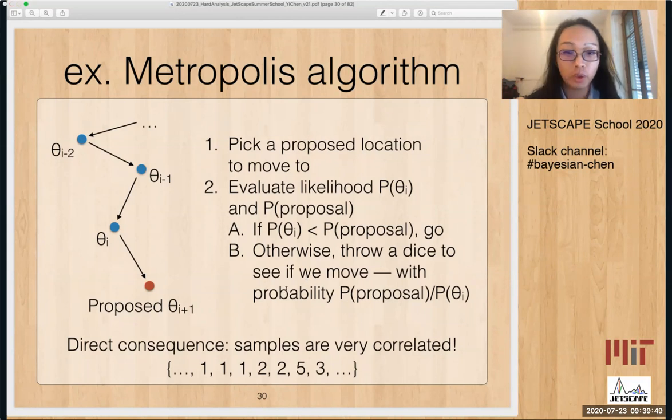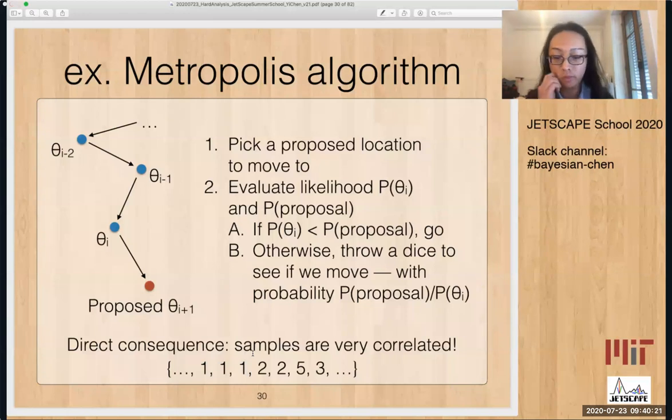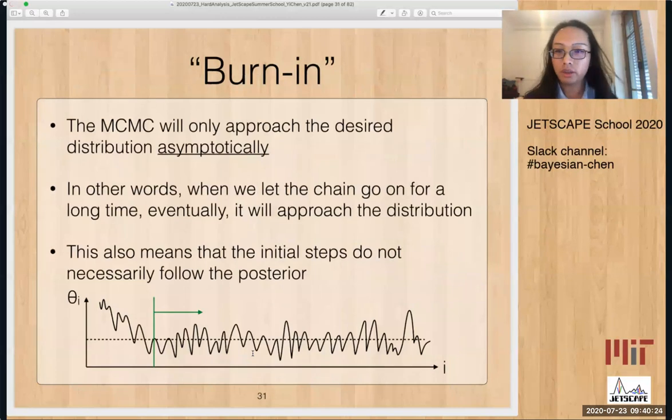So one direct consequence of this is that if you look at the list of samples and look at the neighbor points, because the outcome of each step can be you go to next step or you stay at the same place, that means that if you are staying in a place where it's very likely, it's possible that you will stay in the same place for multiple samples. And therefore the samples are very correlated from one to the next one.